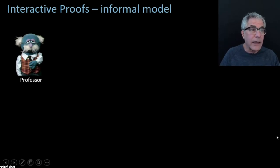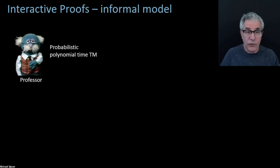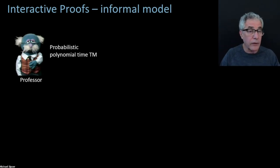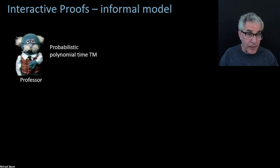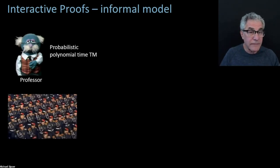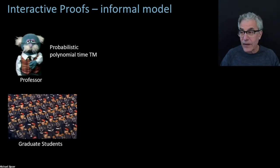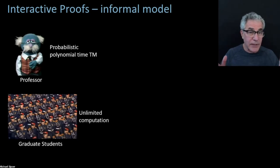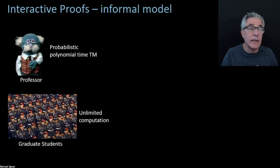So the professor, if he wants to tell whether two graphs are isomorphic or not, probabilistic polynomial time doesn't seem to be enough. Because it seems to be a more-than-polynomial problem. However, the professor has help — he has an army of graduate students. The graduate students are not limited in the same way the professor is. They're young, they're energetic, they can stay up all night, they know how to code. So the graduate students have unlimited computational ability. We're going to think of the graduate students playing the role of the prover.